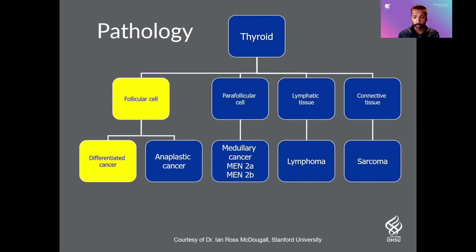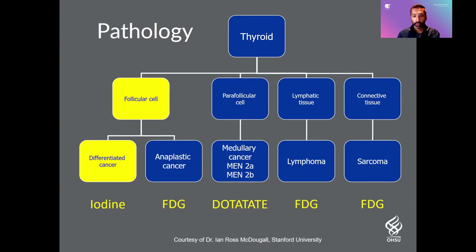There are many different types of thyroid cancer when we look at the overall different tissue types. The ones highlighted in yellow are the only ones that can be evaluated with iodine. The other radiopharmaceuticals cover other types, such as dotatate PET for medullary thyroid cancer, and FDG PET for basically everything else. However, most thyroid cancers — over 90% — are actually differentiated, which is why iodine plays such an important role.